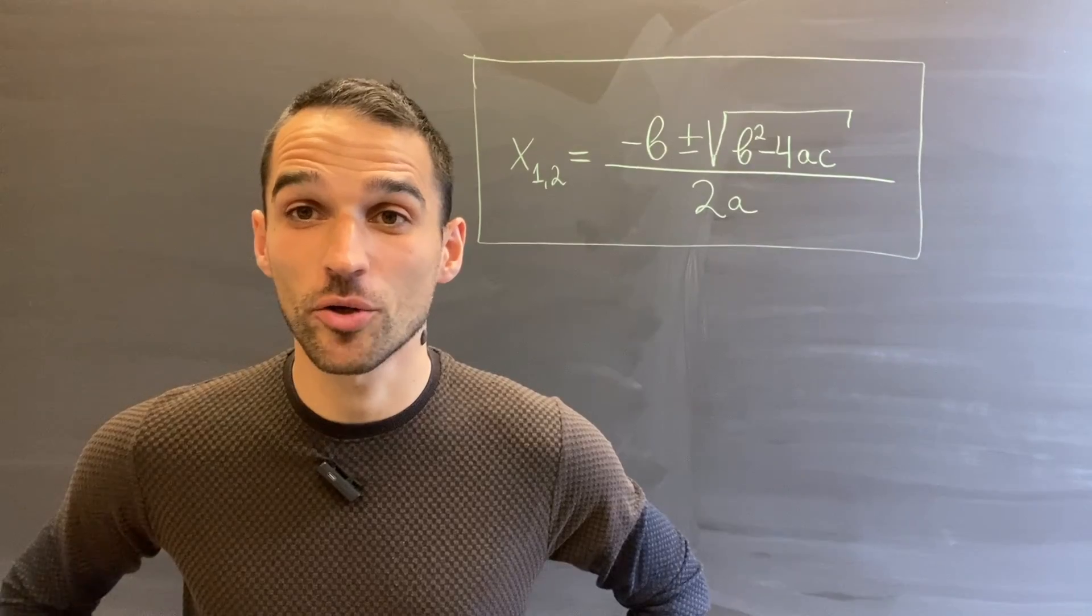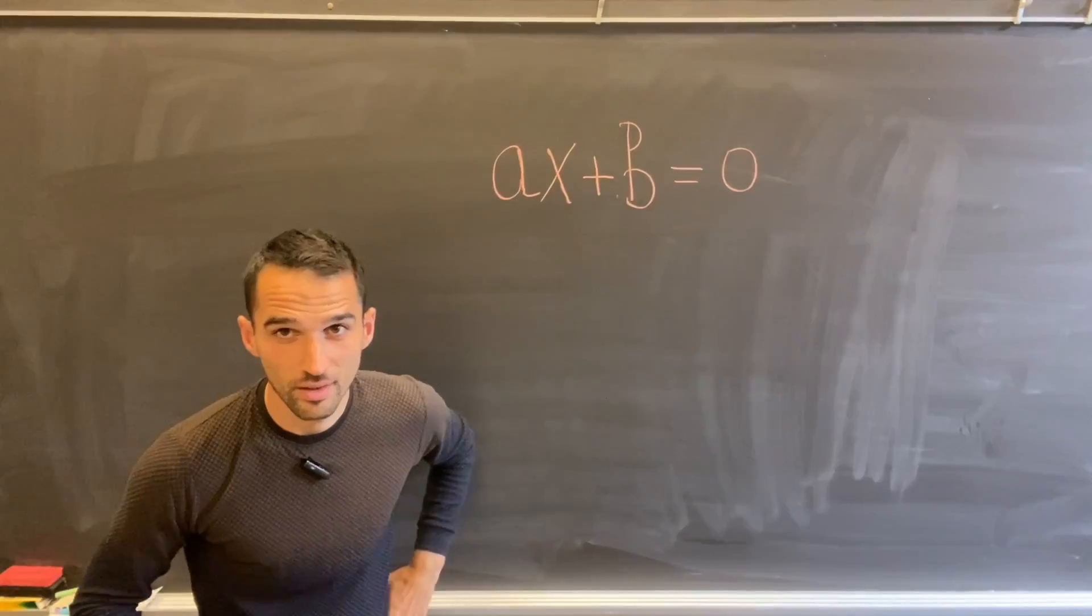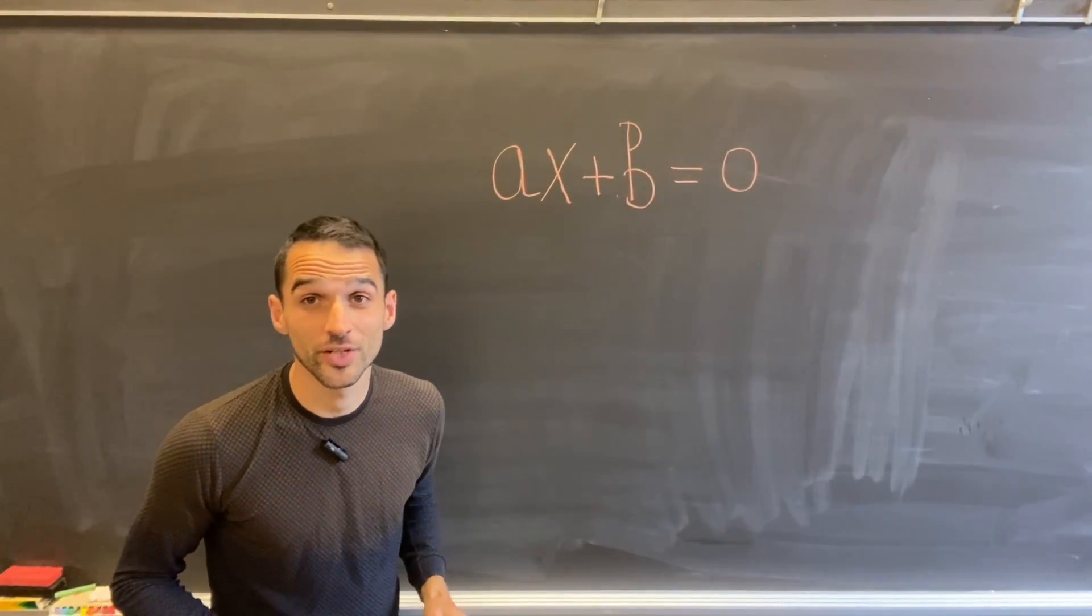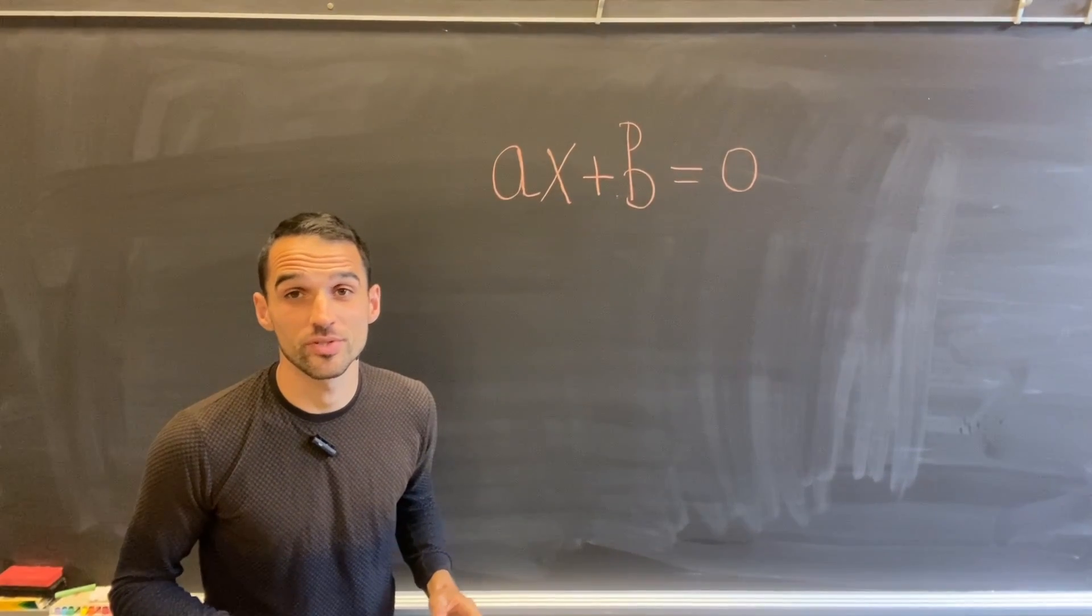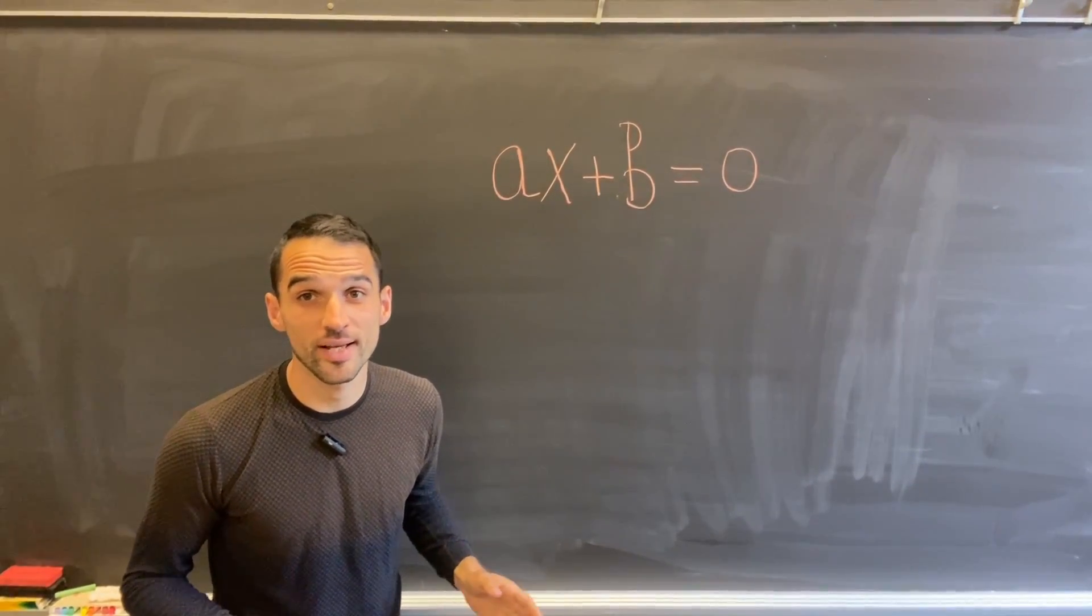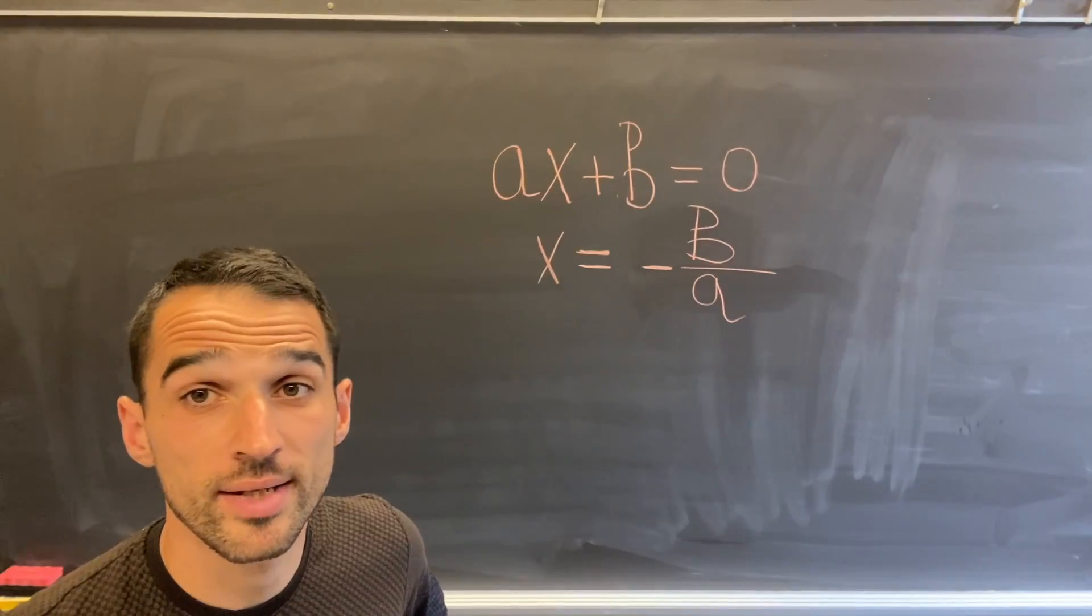Here is what I mean. We all know how to solve linear equations: ax + b = 0. Just move b to the other side and divide by a, so x is -b over a.